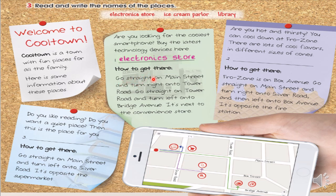¿Cómo podemos llegar ahí? Vamos de frente sobre la calle principal. Luego doblamos a la derecha sobre la carretera Tower. Vamos de frente por la carretera Tower. Luego doblamos sobre la avenida Bridge. Está cerca de la bodega.